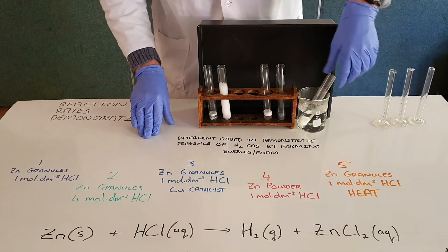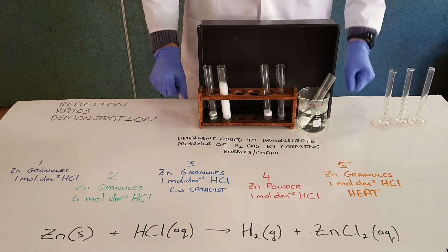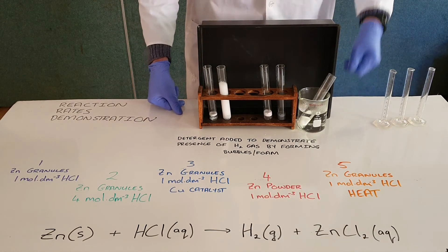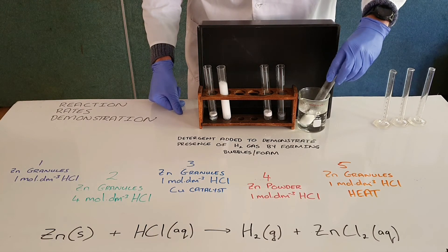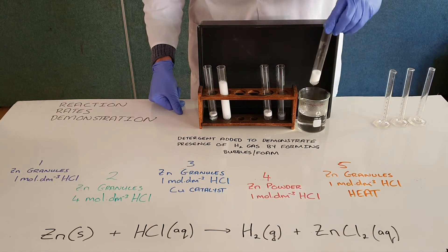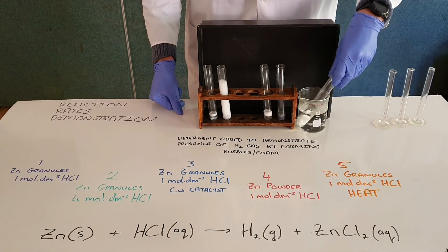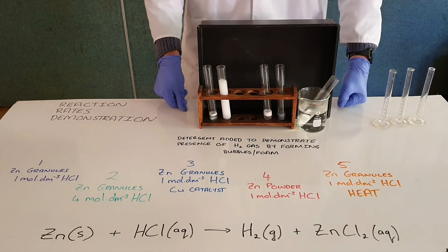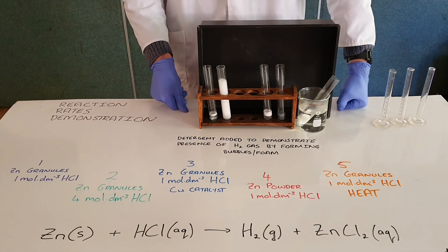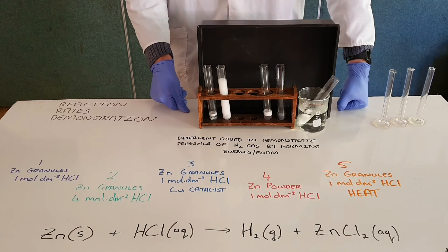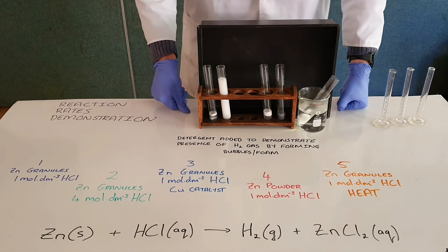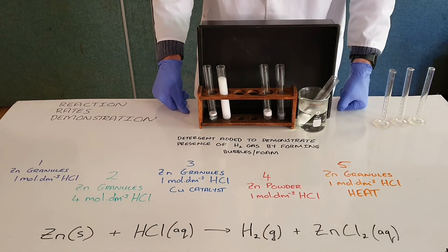And the final reaction that we have here is once again zinc granules and one molar hydrochloric acid, the big difference here being that it's occurring at a much higher temperature, which explains to us why that reaction would proceed far faster. Because we know that as you increase the temperature, you increase the number of molecules that have the required energy in order to form a successful collision, and thereby we would increase the rate of the reaction.